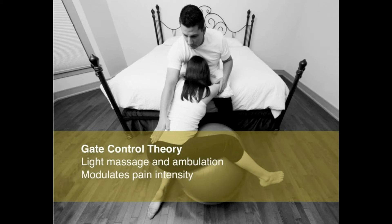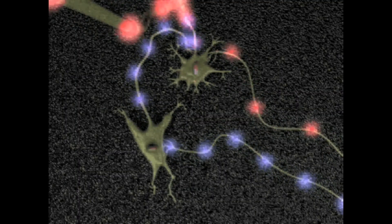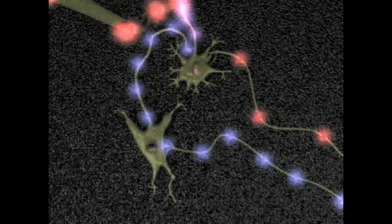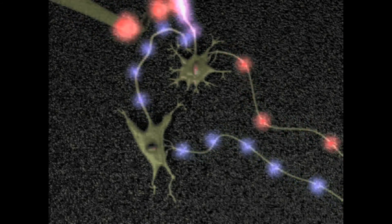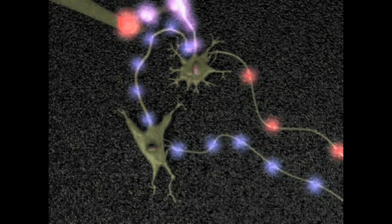The gate control theory involves light massage and ambulation — a light massage of the painful areas. This creates a blockage of part of the pain message in the spine, modulating mostly pain intensity.